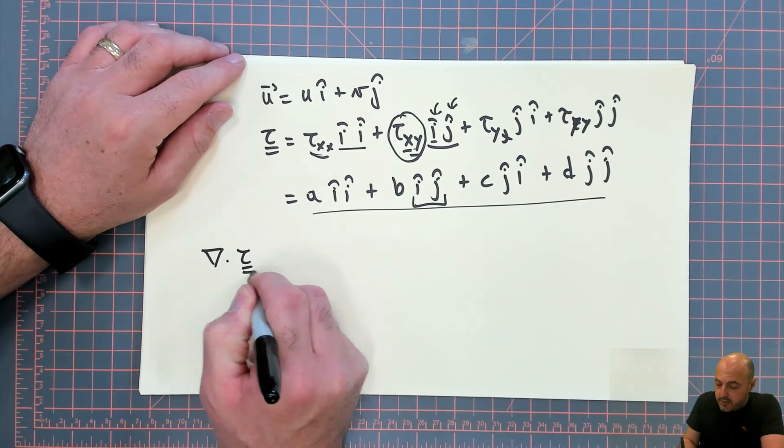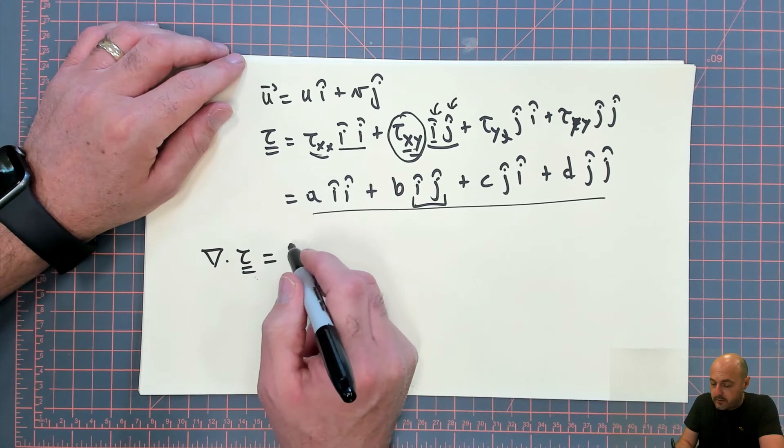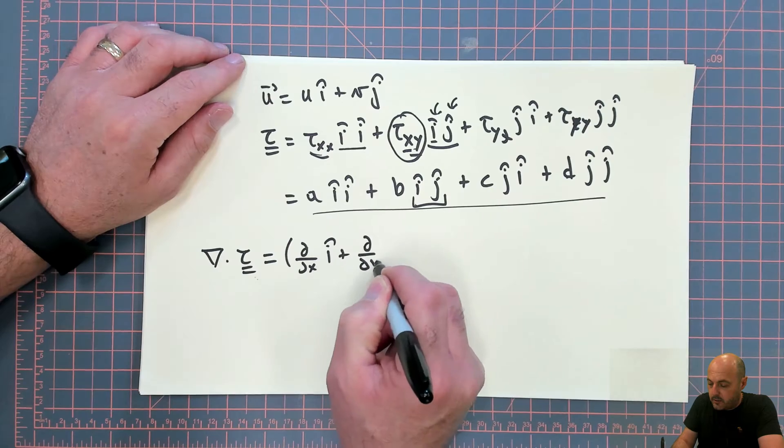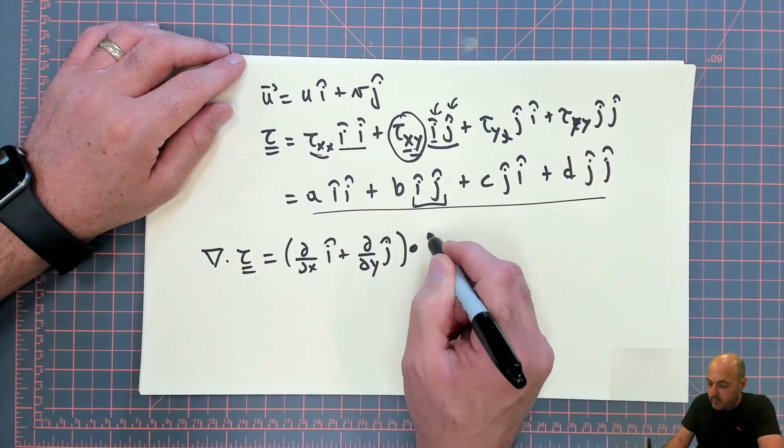For example, if you were to do the div tau, then you would write this as simply the dot product of d/dx i plus d/dy j dotted with,